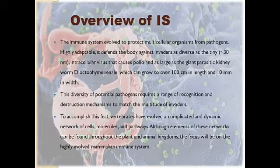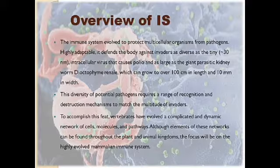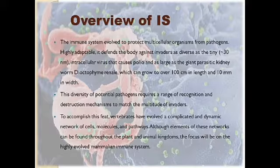The immune system defends the body against invaders as diverse as the tiny 30nm intracellular virus that causes polio — one of the smallest viruses — and as large as the giant parasitic kidney worm, which can grow to over 100 cm in length and 10 mm in width. So it doesn't have a barrier of size; it can deal with organisms very small or very large.